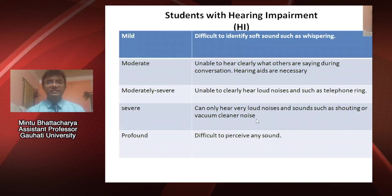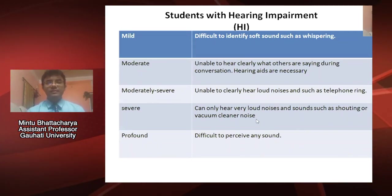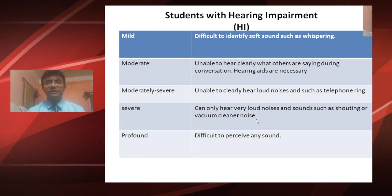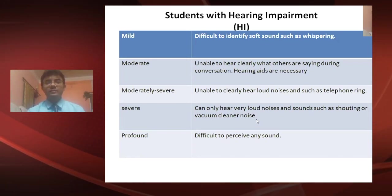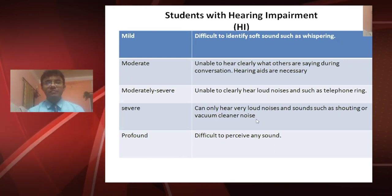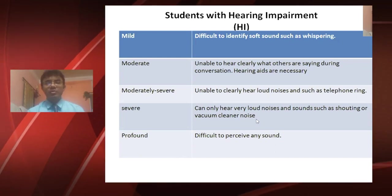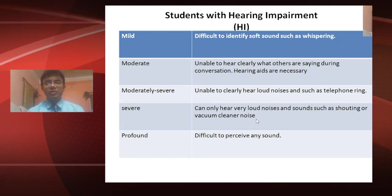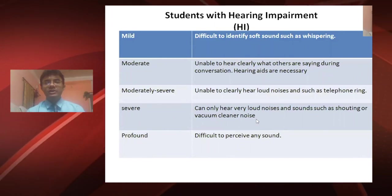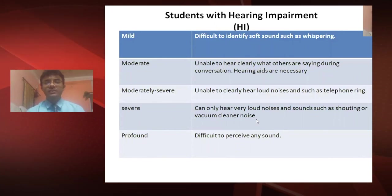Students with hearing impairment can be classified into five subgroups: mild, moderate, moderately severe, severe, and profound. Under the category of mild, students with hearing impairment find it difficult to identify soft sounds such as whispering.